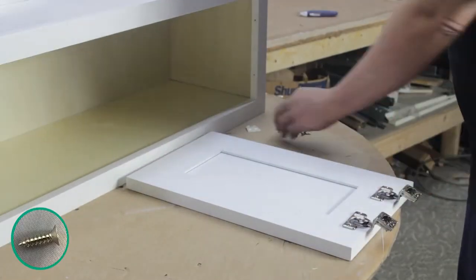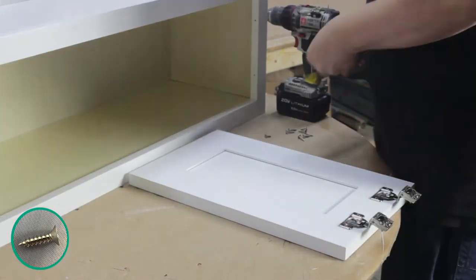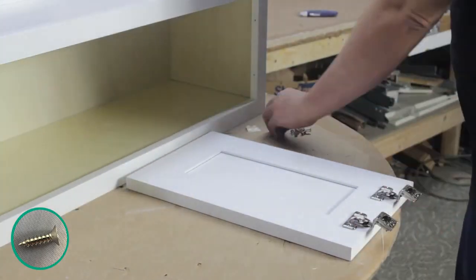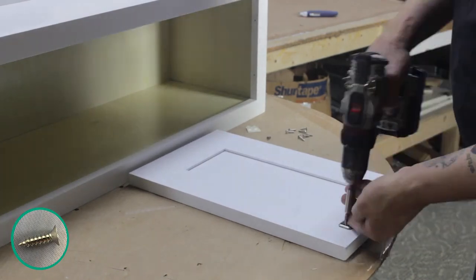Place the door face down and set each hinge into place, making sure the holes on the hinge line up with the holes on the door. Fasten them down with two screws each. Then place a rubber bumper in each corner on the door opposite your hinges.